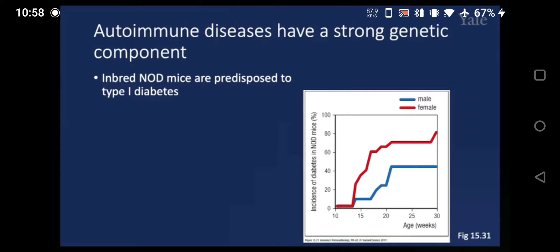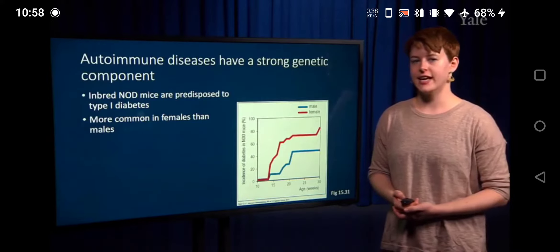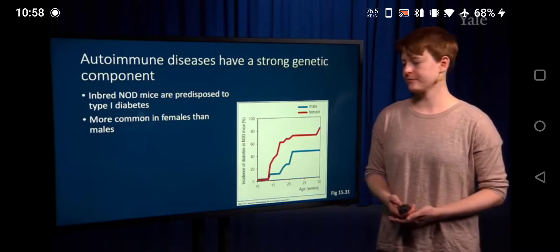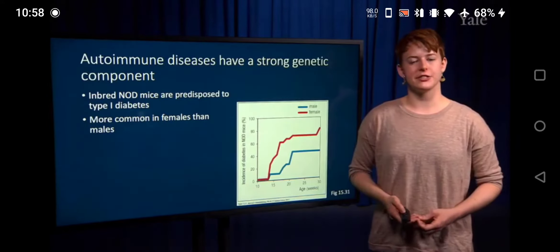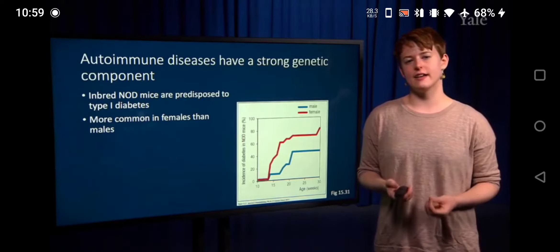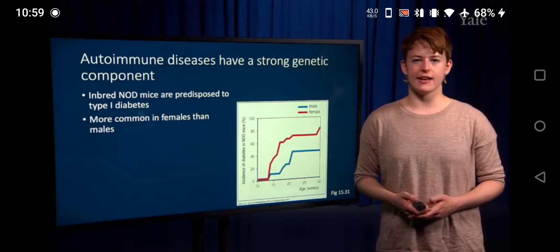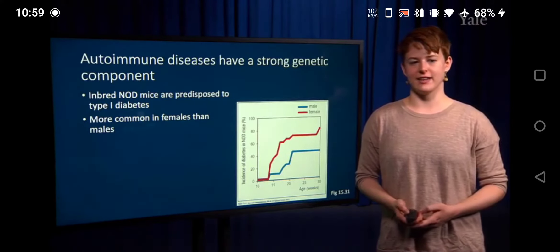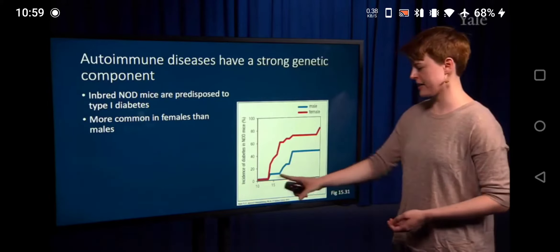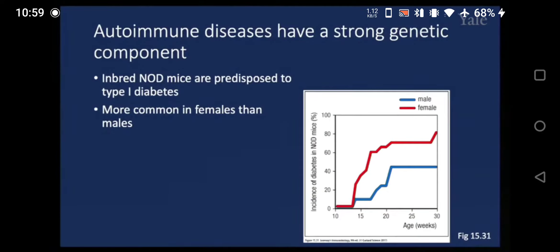We can also see that autoimmunity is much more common in females than in males. The extent varies depending on the disease — type 1 diabetes has a more even breakdown of male to female, but SLE has about a 70% incidence rate in females. You can see this in NOD mice as well, where the female mice in red have a much more common predisposition to developing diabetes.